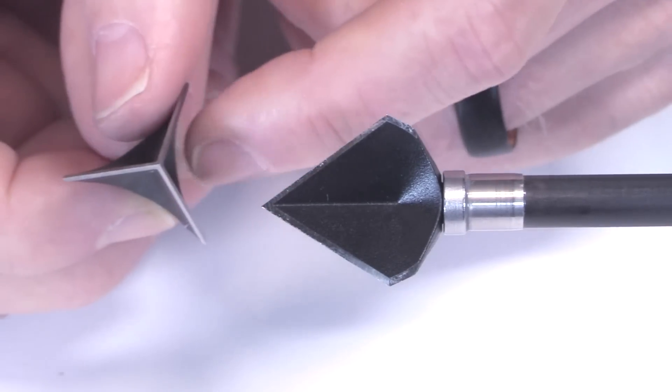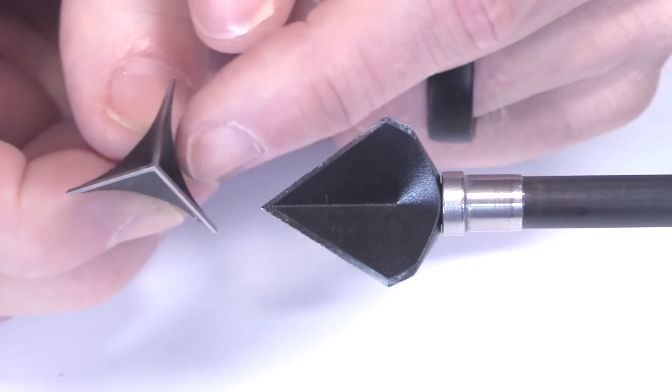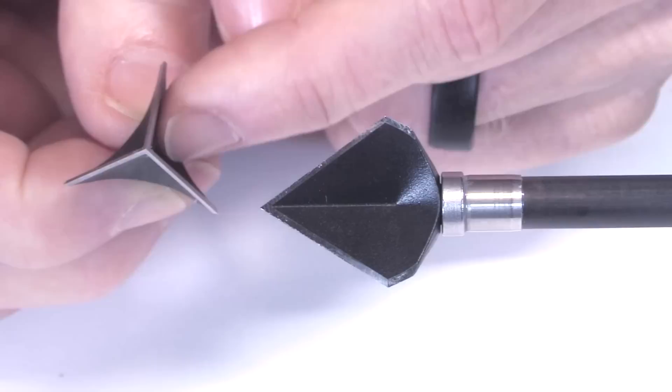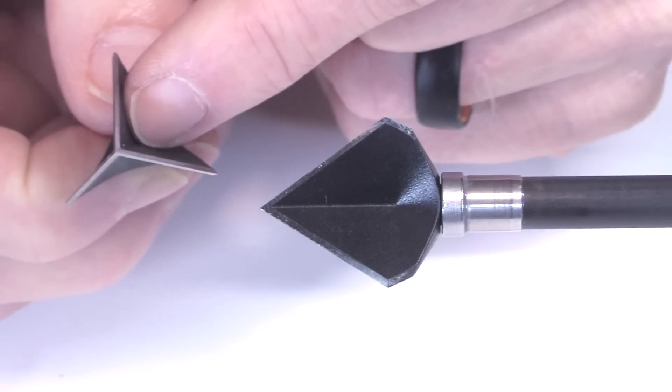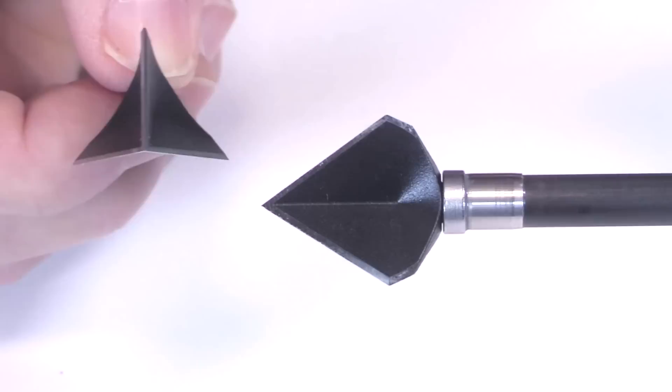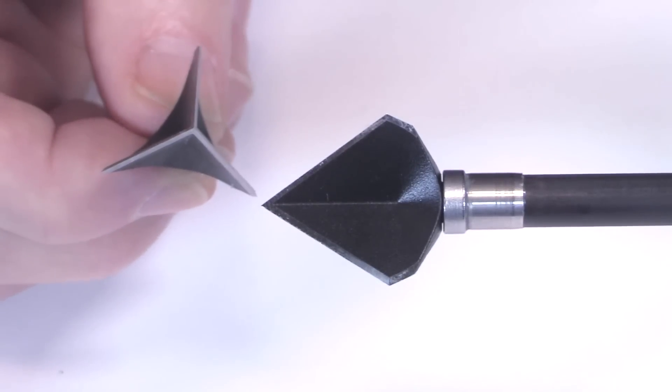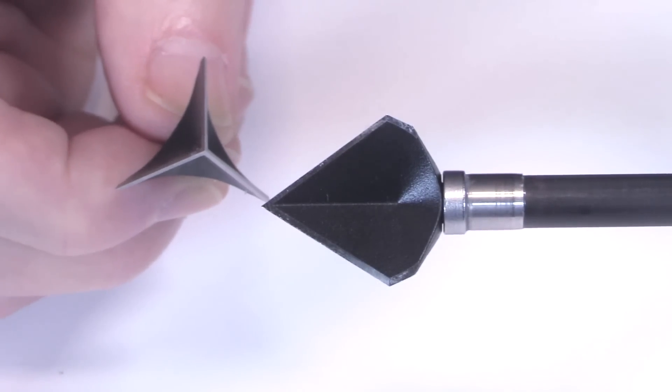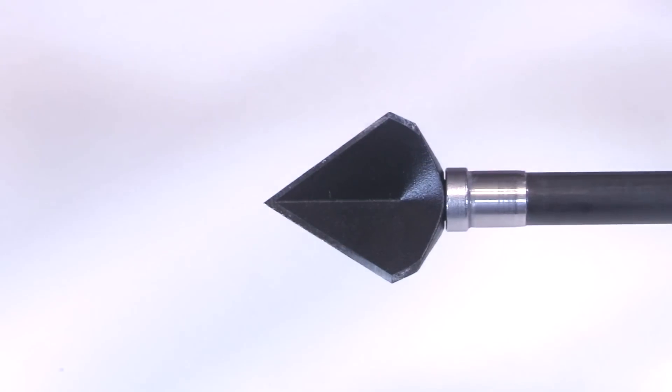And the blades are 0.038 inches thick at their thinnest portion, but they get wider and wider as they get closer to the center there. So you can see how it's going to displace a lot of tissue and make a hole that's going to be difficult to close up.